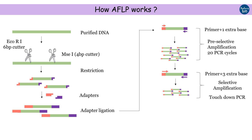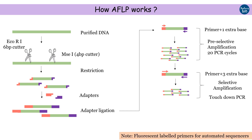If AFLP separation and analysis is to be performed on a sequencer, fluorescently labeled primers are used during selective amplification. Fragment separation may be done on a 6% polyacrylamide gel or an automated sequencer containing POP gels. The banding pattern of the fragments is then analyzed manually or with analytical software.